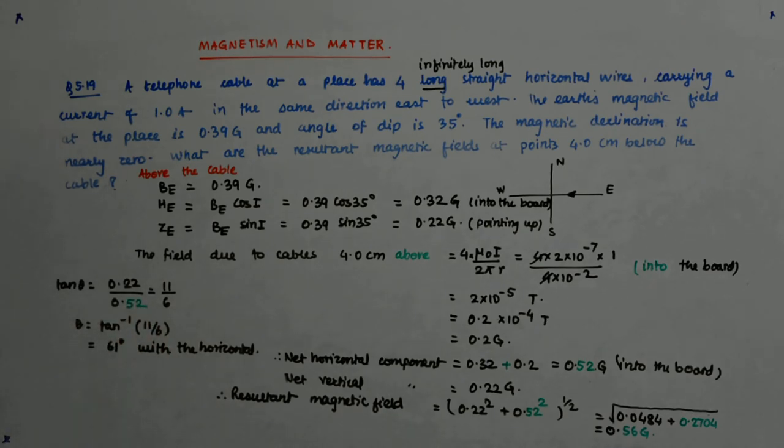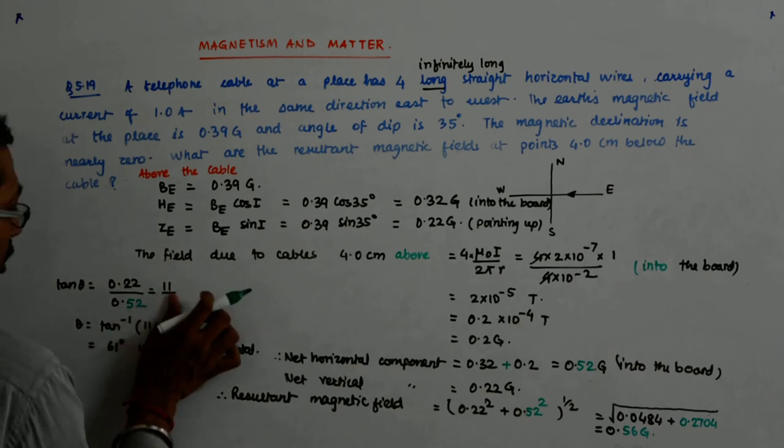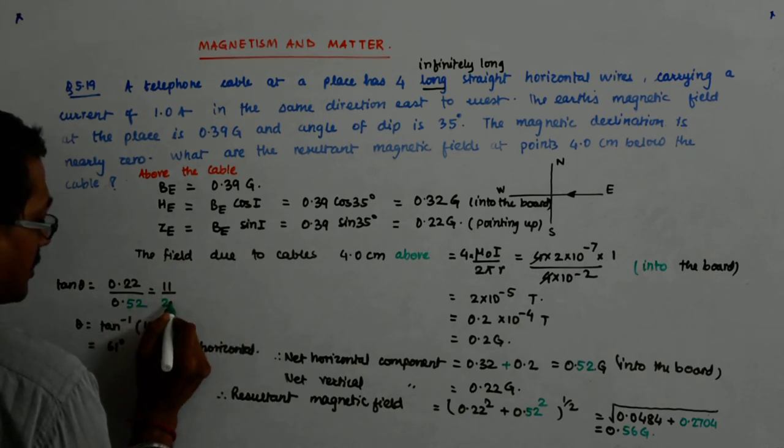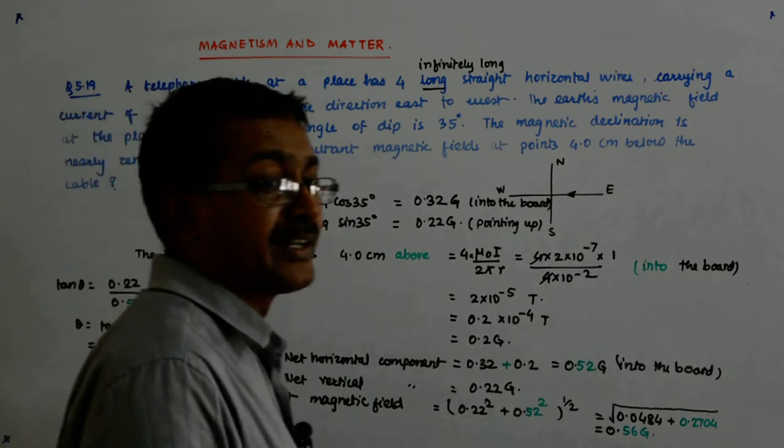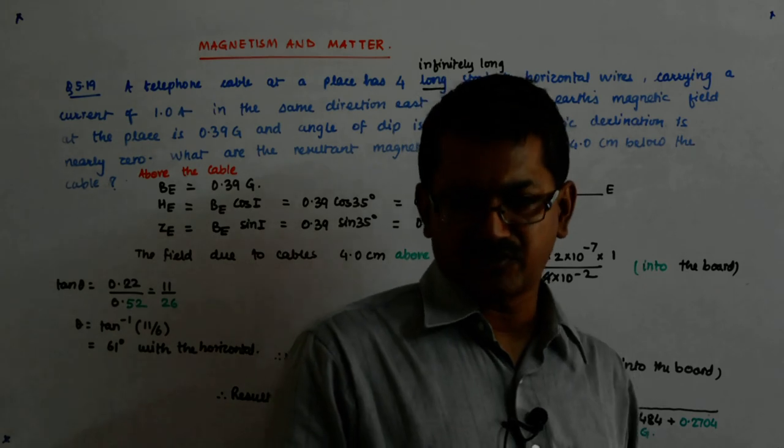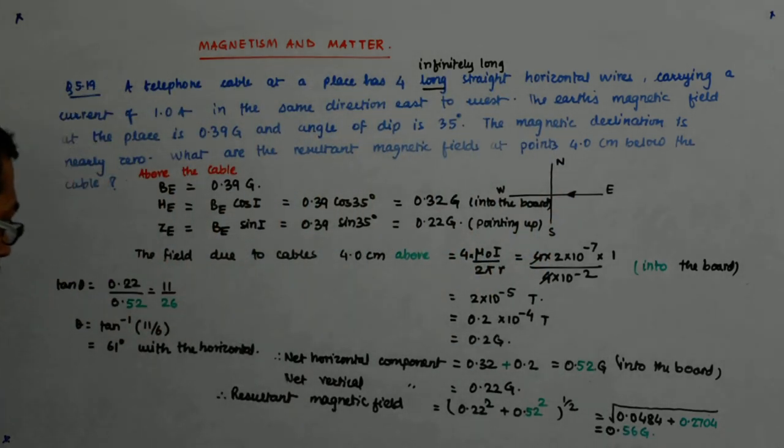Now, 0.22 upon 0.52 is 11 upon 26. You see, from 11 upon 6, it went to 11 upon 26. Almost 4 times it has reduced.